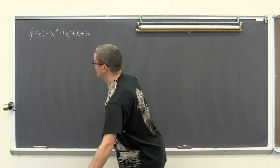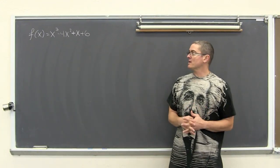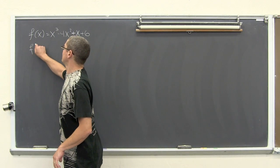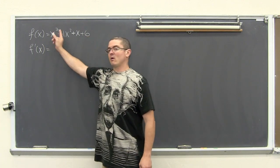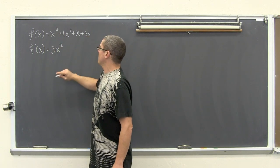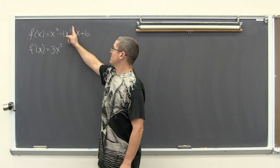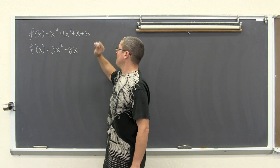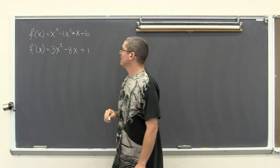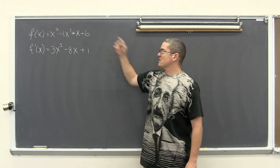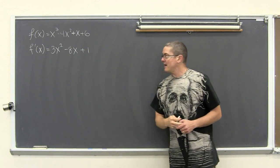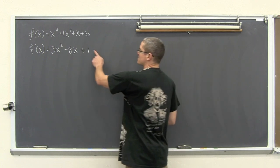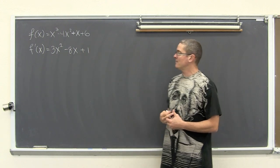Here is our first example. We have f of x equals x cubed minus 4x squared plus x plus 6. We are going to find the derivative. f prime of x equals, applying the power rule: 3x squared. We have a constant times a power, so we bring the exponent down — 2 times negative 4 is negative 8 — bring the exponent from 2 to 1. Here we have plus x so that is just 1. The constant term goes to zero. So the derivative is 3x squared minus 8x plus 1. This will tell us the slope of the function at any point where x is defined.